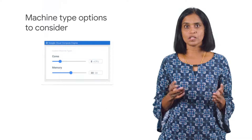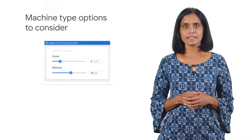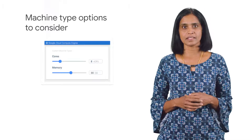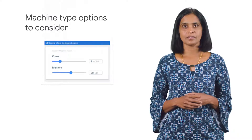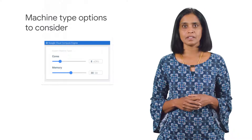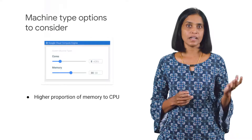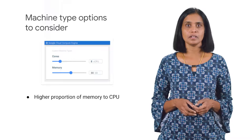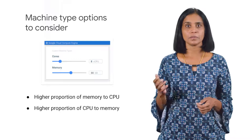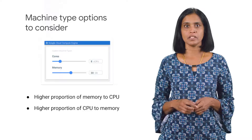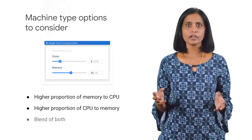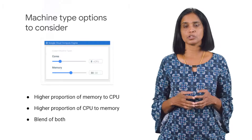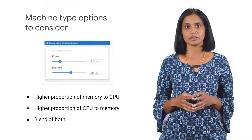To meet your workload requirements, there are different machine type options that you can consider. For example, a higher proportion of memory to CPU, a higher proportion of CPU to memory, or a blend of both through Google's standard configuration.